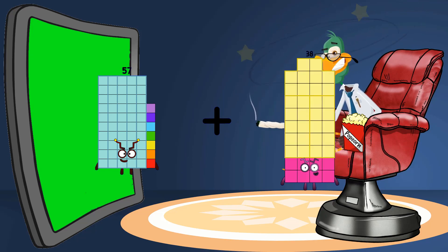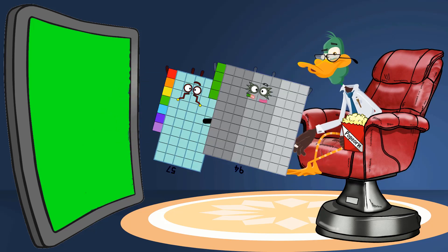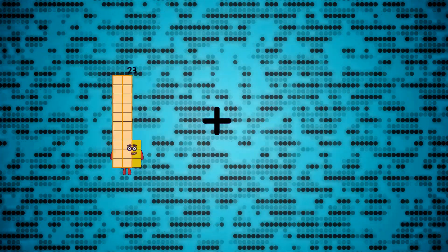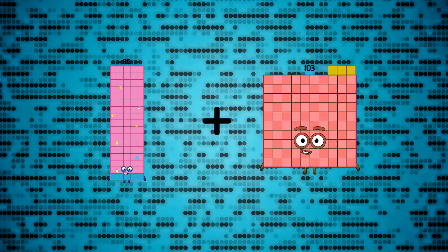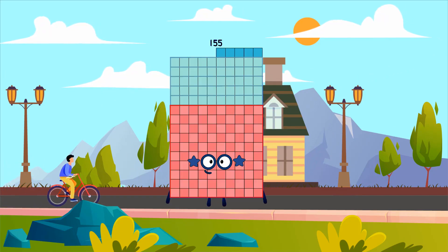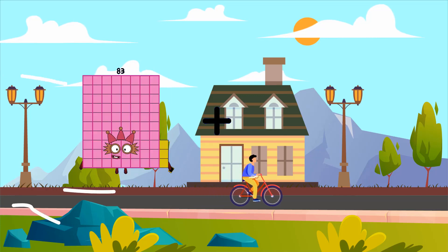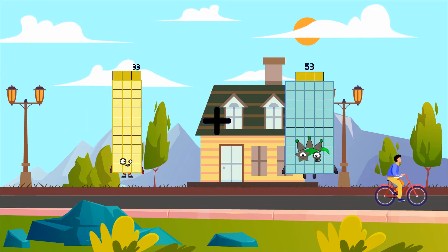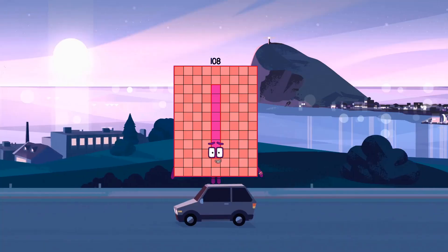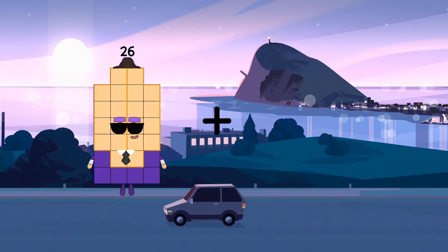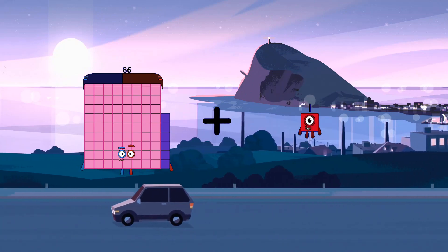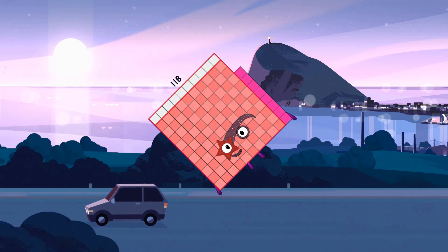70 plus 87 equals 151. 85 plus 70 equals 155. 33 plus 75 equals 108. 86 plus 32 equals 118.